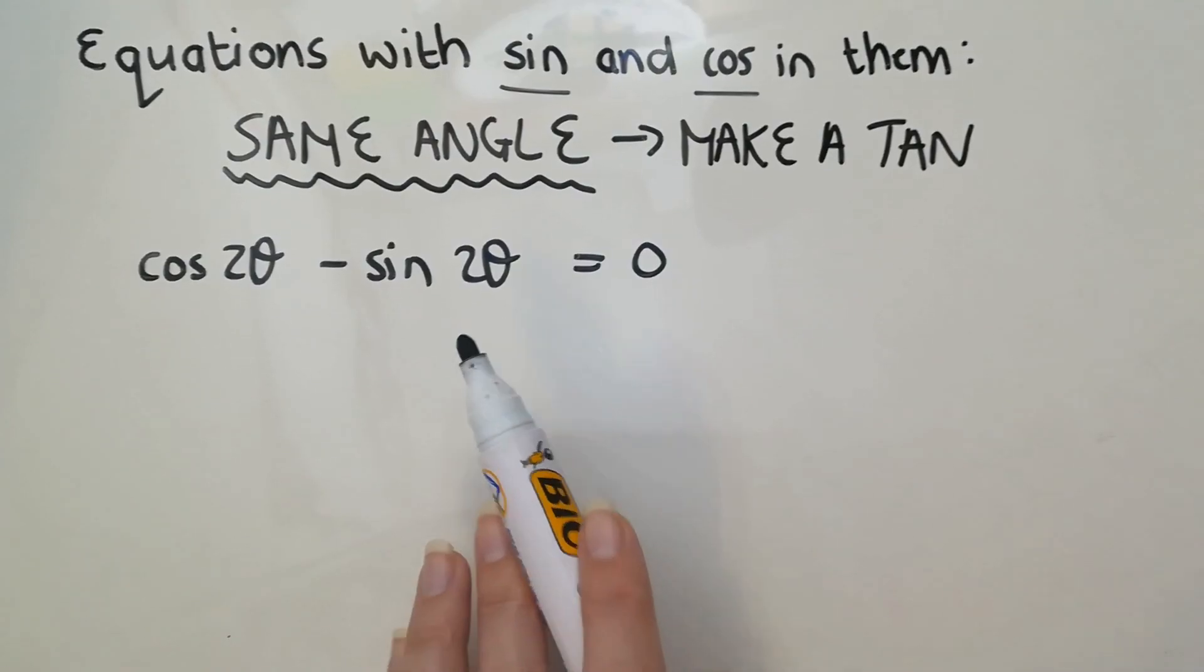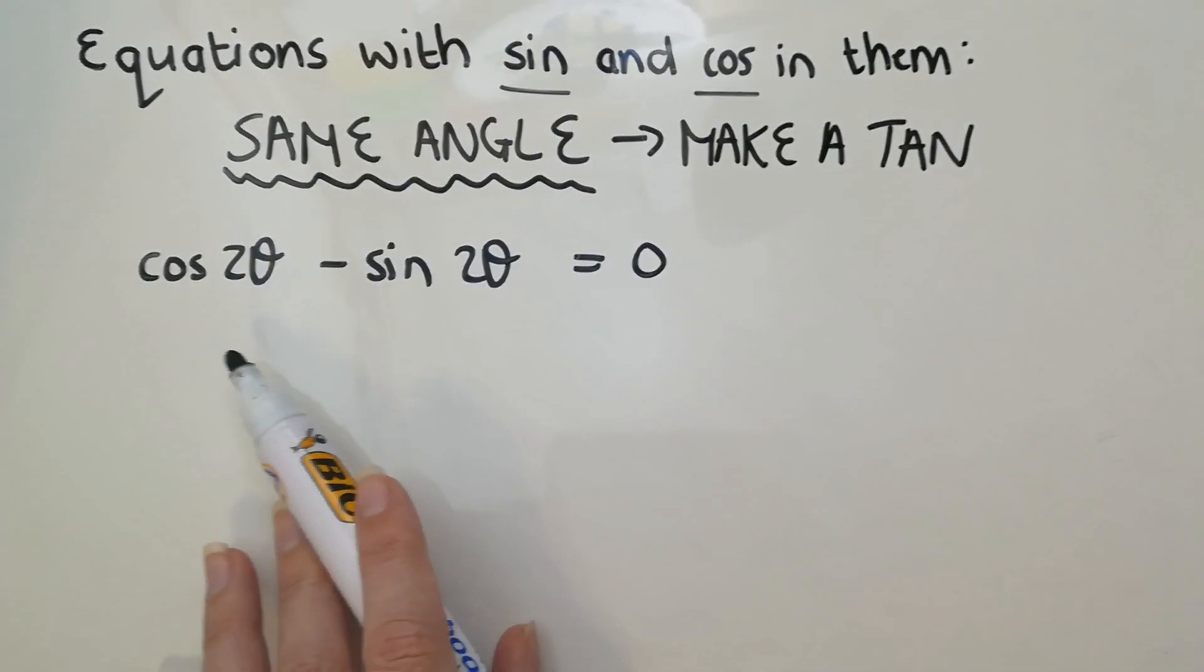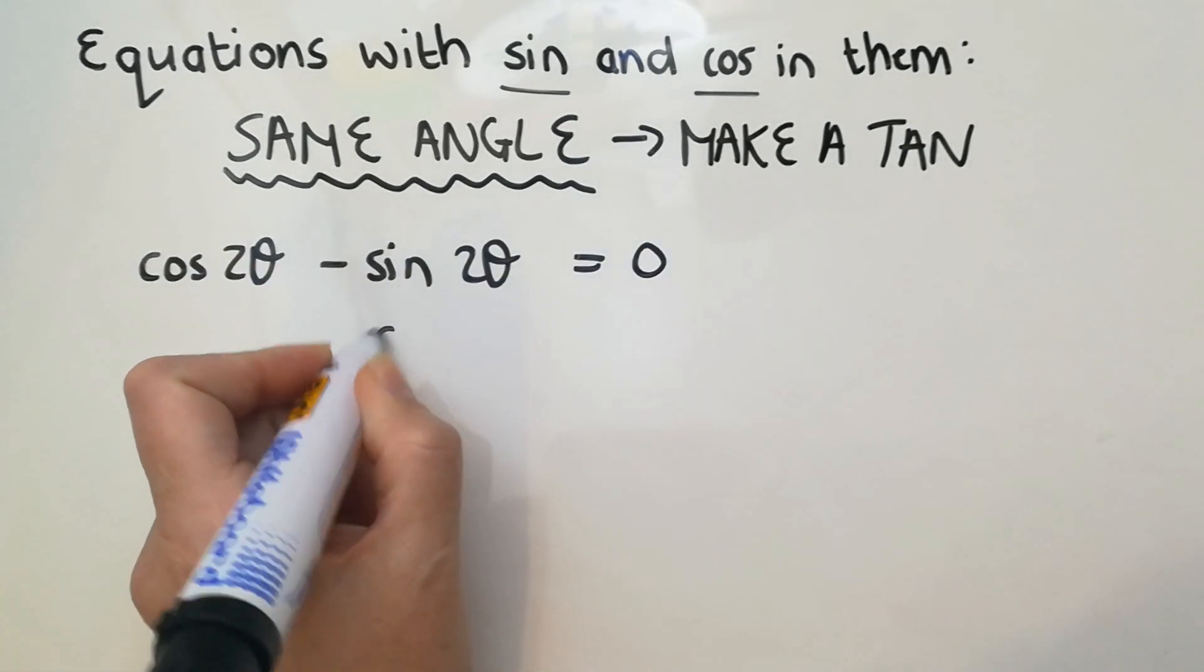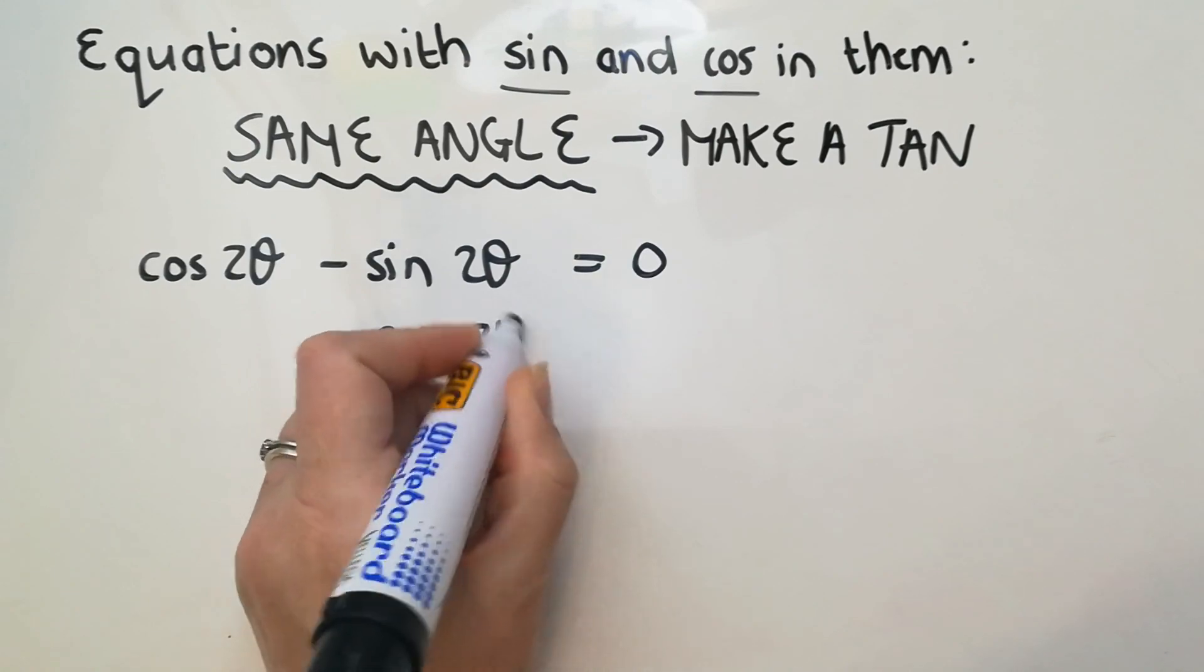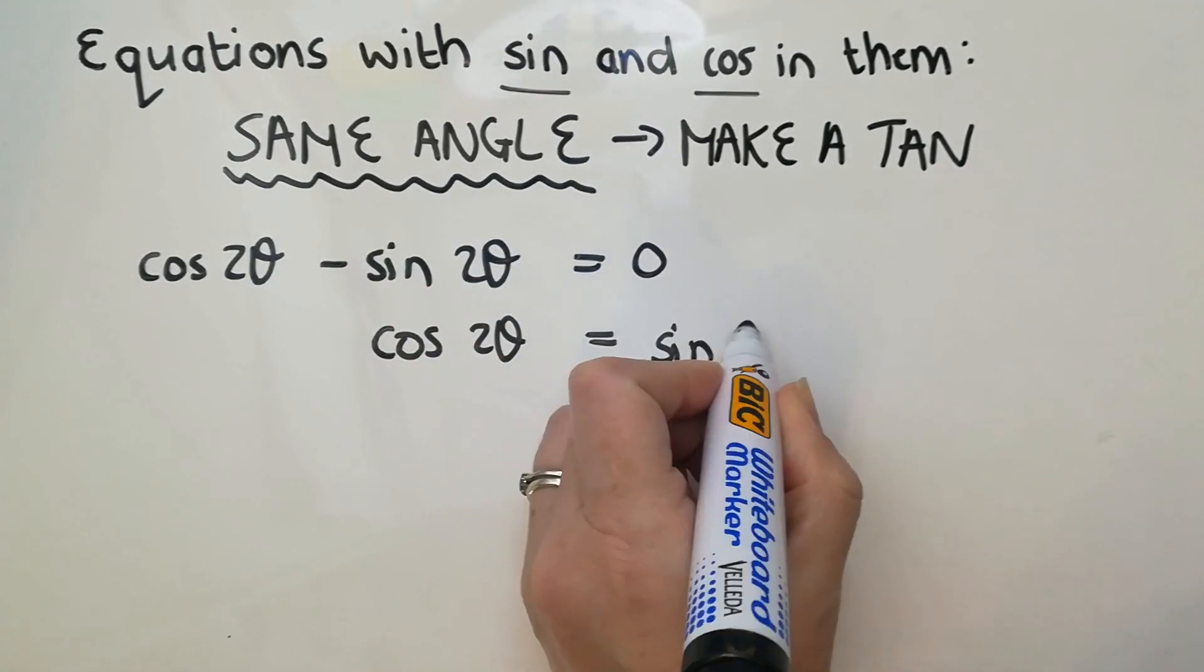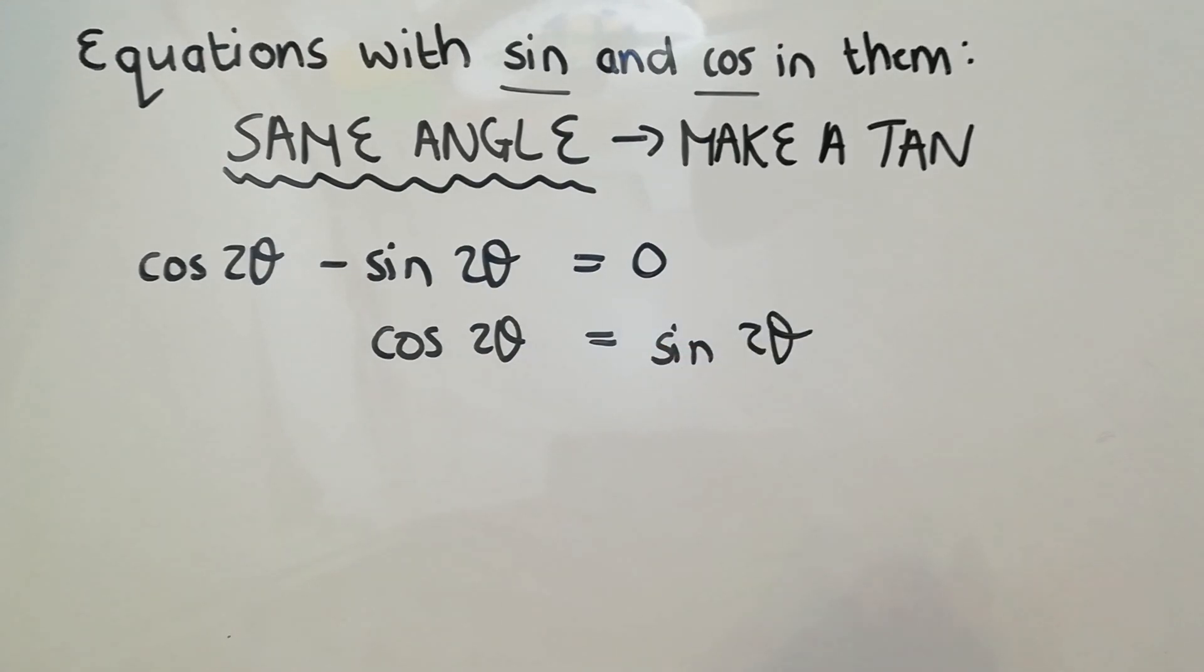So what I'm going to do is I'm going to make sure that the cos is on the one side and the sine is on the other. That'll be easy by taking that one over. So I'm going to say cos 2θ equals, that'll become positive, sin 2θ.